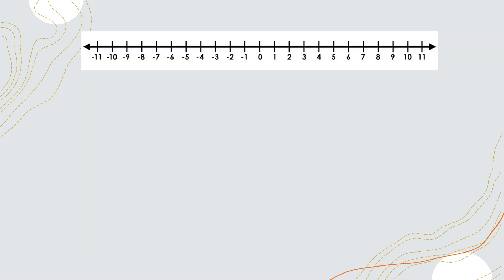Now let us use the number line to get the distance of a given number. The number line consists of negative integers, positive integers, and zero. Everything going to the left is negative, and everything going to the right is positive.